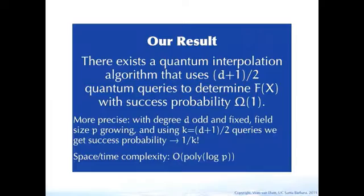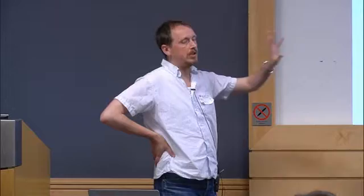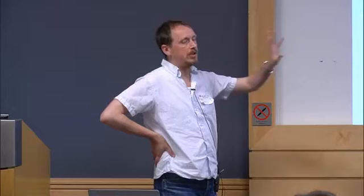Regarding the probability model: the success probabilities come entirely from quantum mechanics. For each instance, it's the same probability — it's independent of which polynomial you're trying to solve. If you run k! times you improve your odds, but then the number of queries becomes k × k!, which is worse than the classical approach. So the probabilities are from quantum mechanics and are independent of the instance of the polynomial.